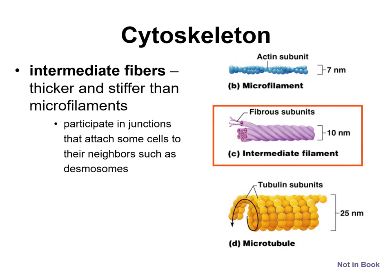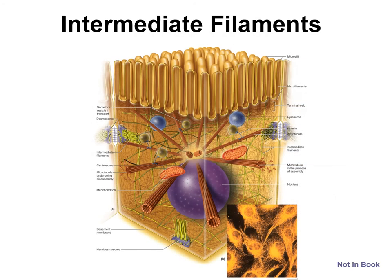Intermediate filaments are intermediate in size and less flexible than microfilaments. These are the structures that participate in junctions such as desmosomes, where one cell is anchored to an adjacent cell. You can see the desmosomes — those anchoring junctions between cells — and notice the intermediate filaments that spread throughout the cell.